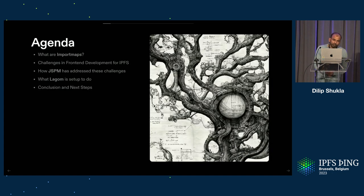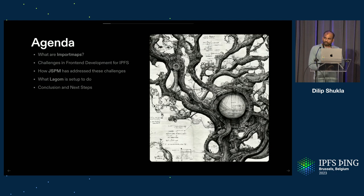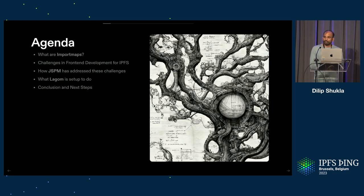The agenda today is we're going to talk about import maps — what they are and what are the challenges for web development in general, but particularly for front-end development. What are the pressing issues? How JSPM has already addressed those challenges and how it plans to do them in the future. What is Logom and what is it set up to do? And conclusion — basically, what's next?